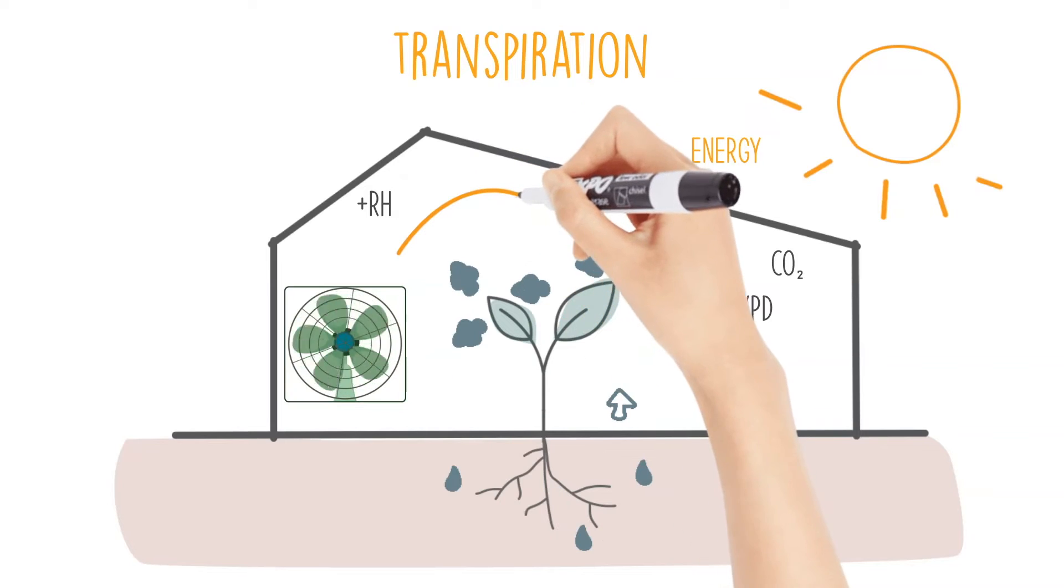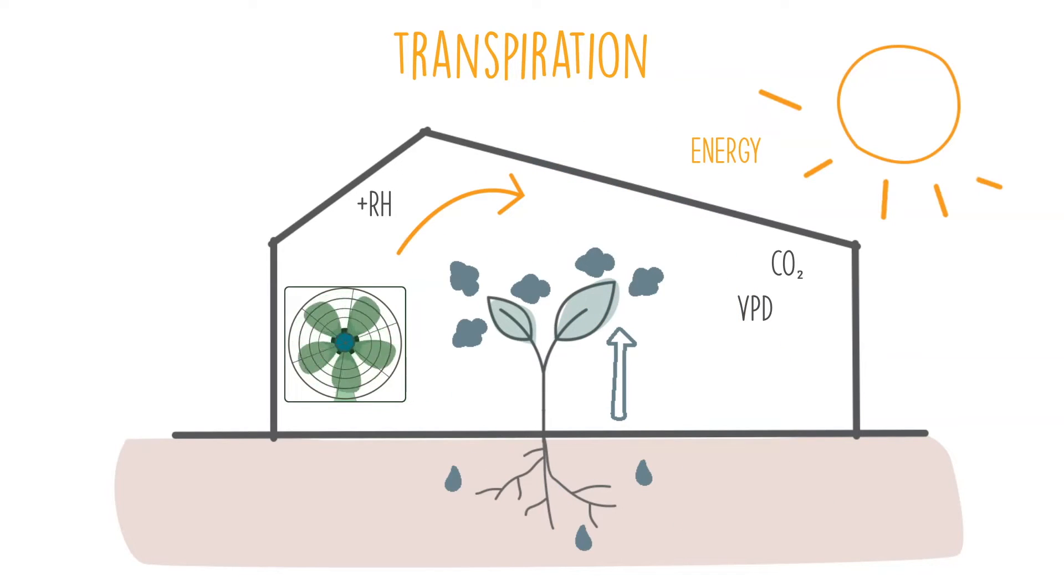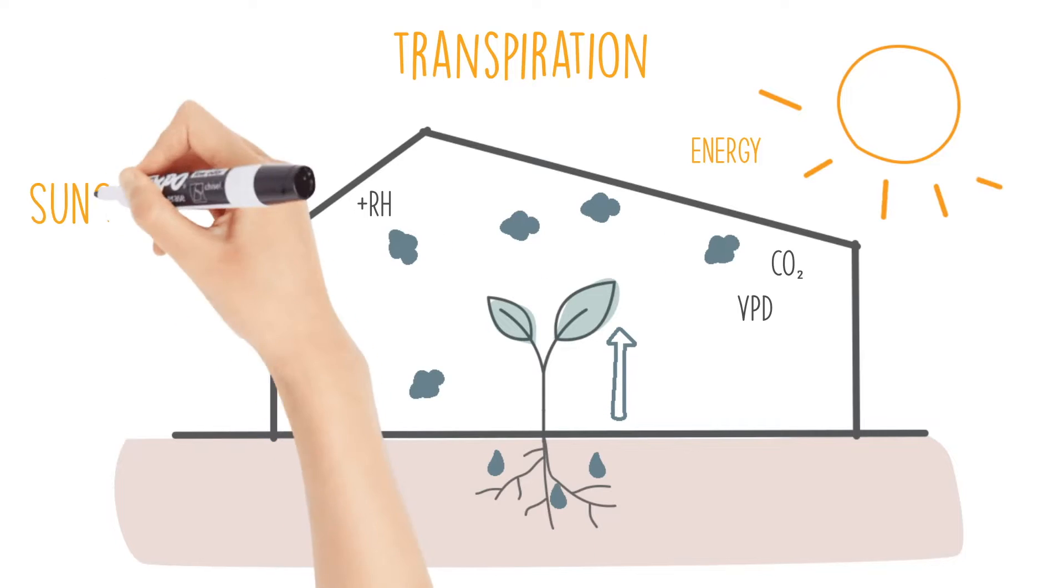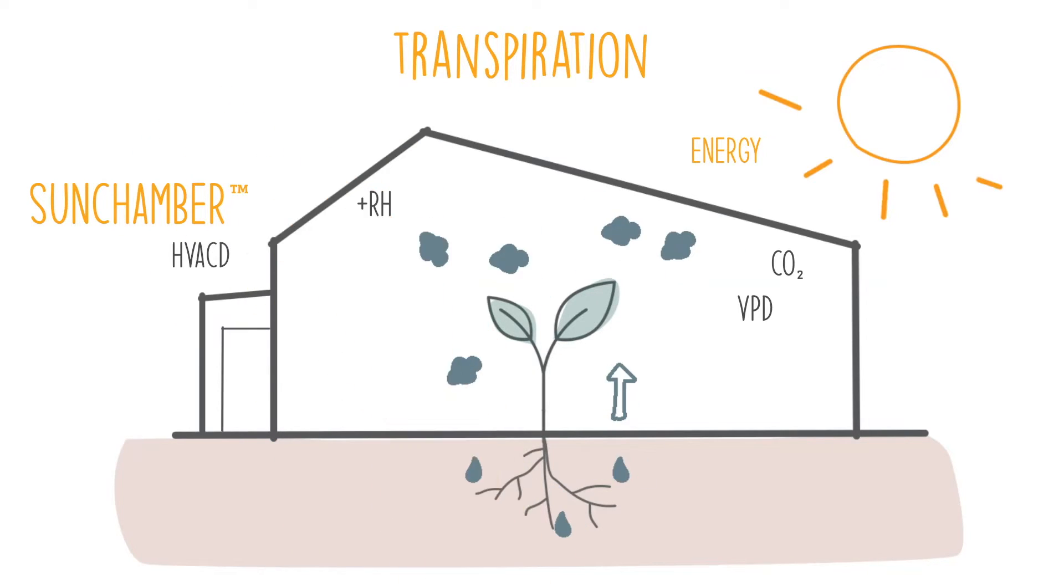If your greenhouse is ventilated, the cheapest way to deal with this added moisture is to exhaust it outside. It gets a little more complicated with a sealed greenhouse like the Ceres Sun Chamber, which doesn't exhaust the air but instead relies on an HVACD system to recirculate and treat the air.